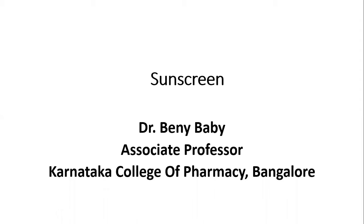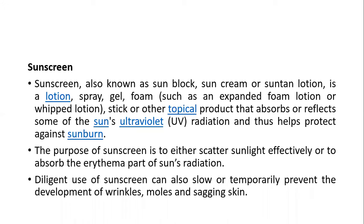The topic is sunscreen agents — also known as sunblock, sun cream, or suntan lotion. There are different products available under the category of sunscreens: it may be a lotion, spray, gel, foam, stick, or other topical products. The purpose of sunscreen agents is to absorb or reflect some of the sun's ultraviolet radiation, thereby helping to protect against sunburn.